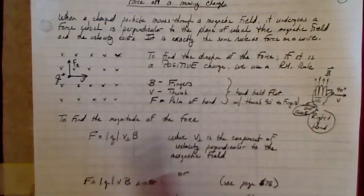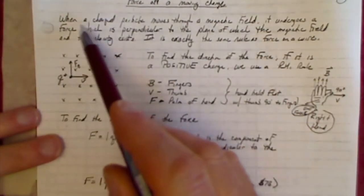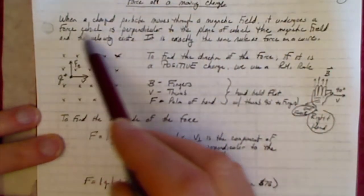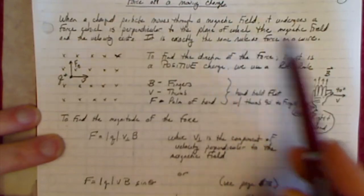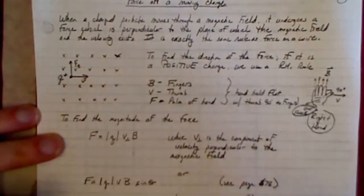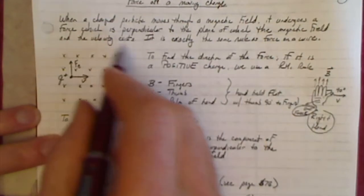Now I've got a little drawing over here, and as I wrote here on the top, when a charged particle moves through a magnetic field, it undergoes a force which is perpendicular to the plane of which the magnetic field acts and the velocity exists.